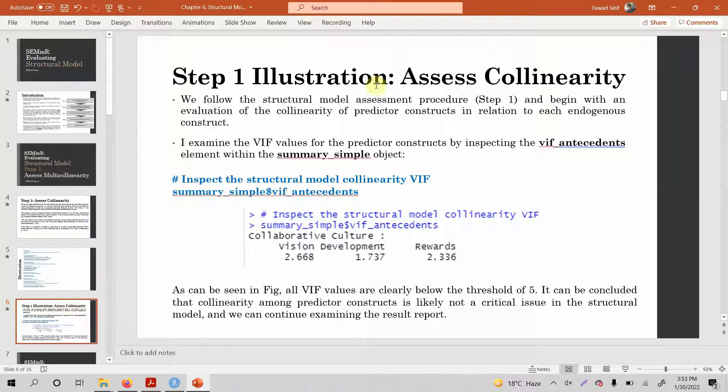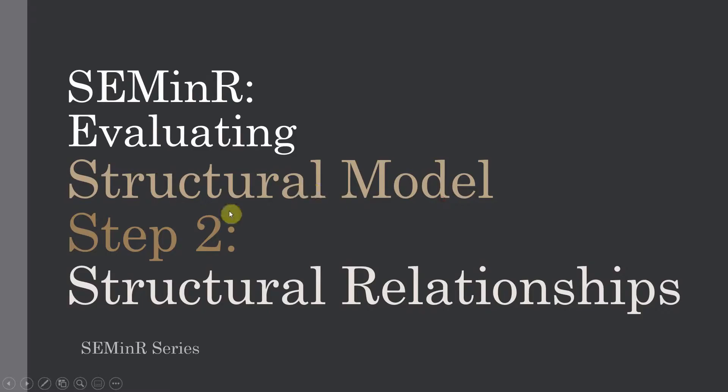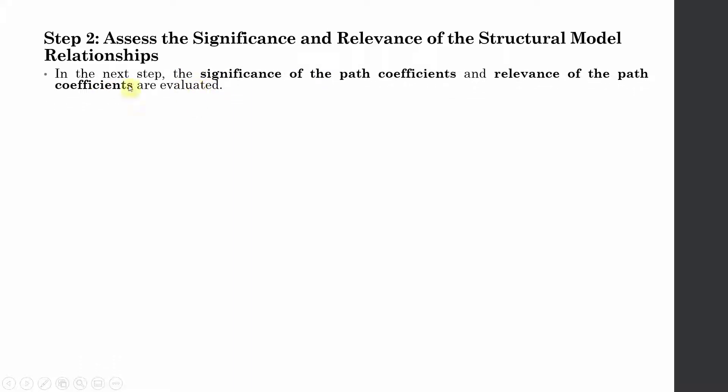Moving on, now that we have assessed the collinearity, the next step is assessing the structural relationship. This is step two: assessing the structural relationships. As part of step two, the significance of path coefficients and relevance of path coefficients are evaluated.